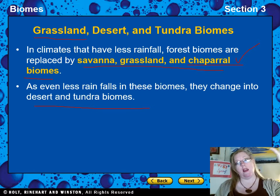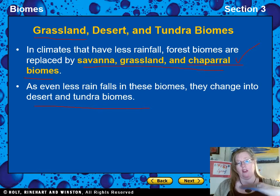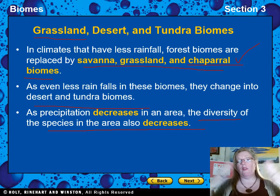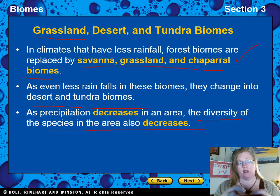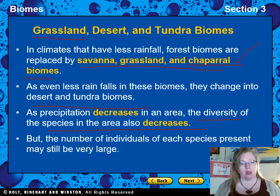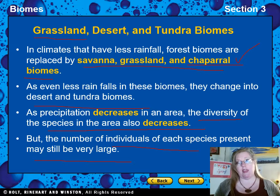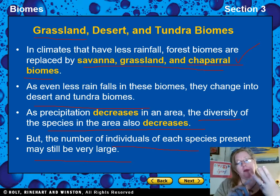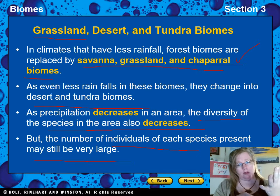With a little rain — not enough to grow trees — you move into savannahs, grasslands, and chaparral. With even less rain, you turn into desert and tundra. As rainfall decreases, the diversity of species also decreases. The less rain you have, the fewer types of animals and plants can live there. However, the number of individuals of each species can still be very large — fewer types, but still plenty of individuals.